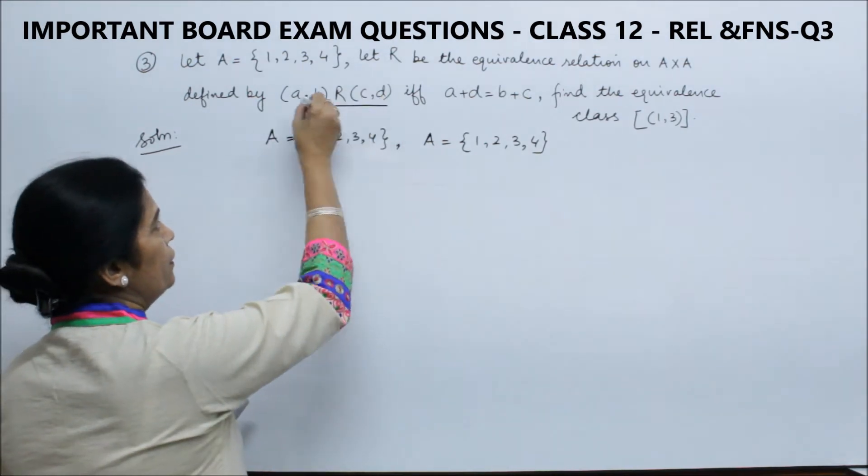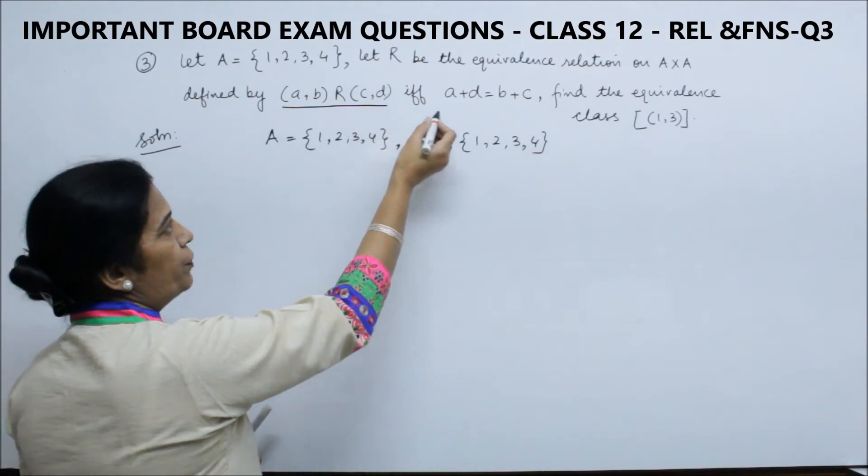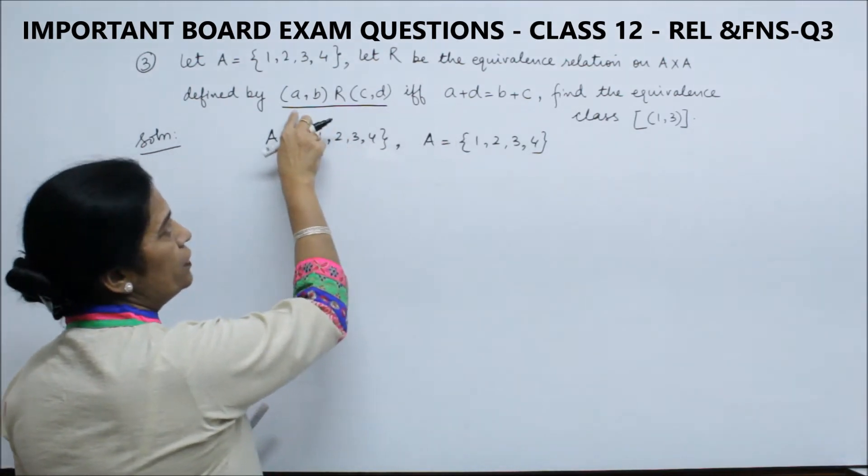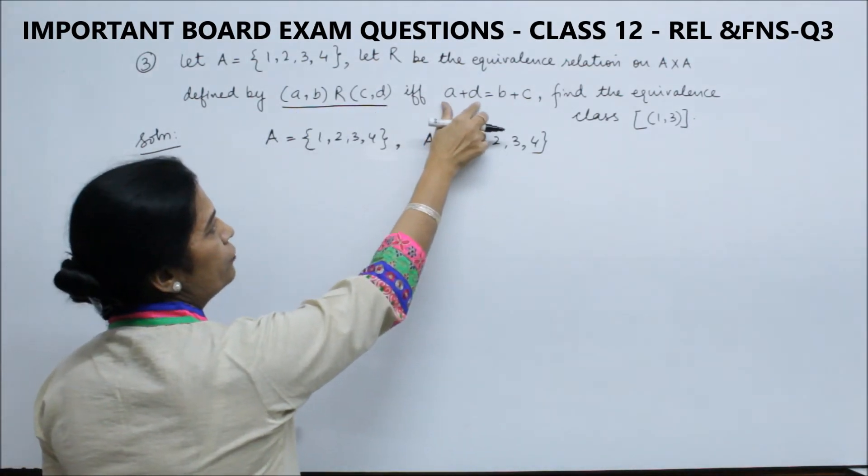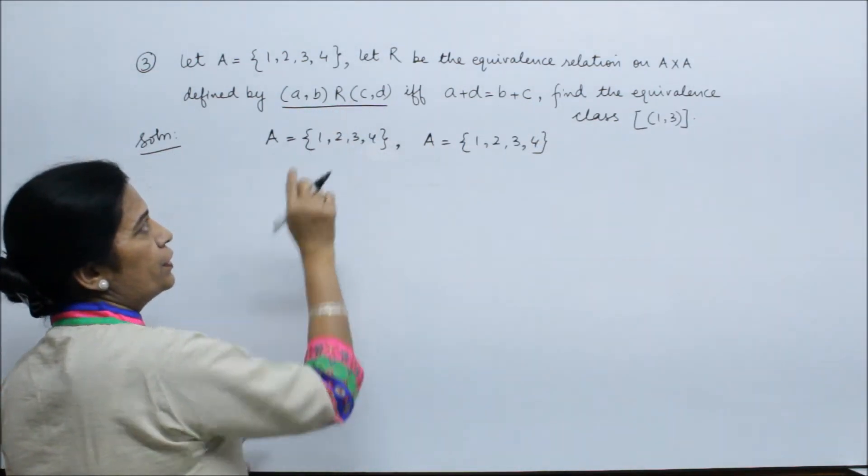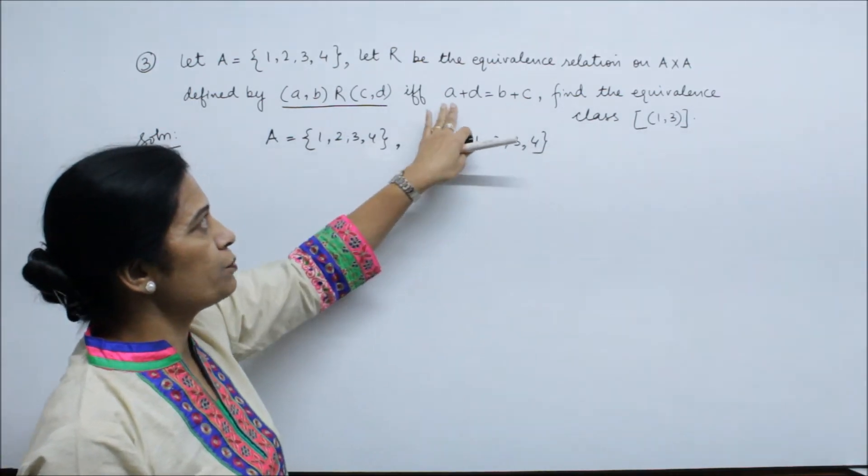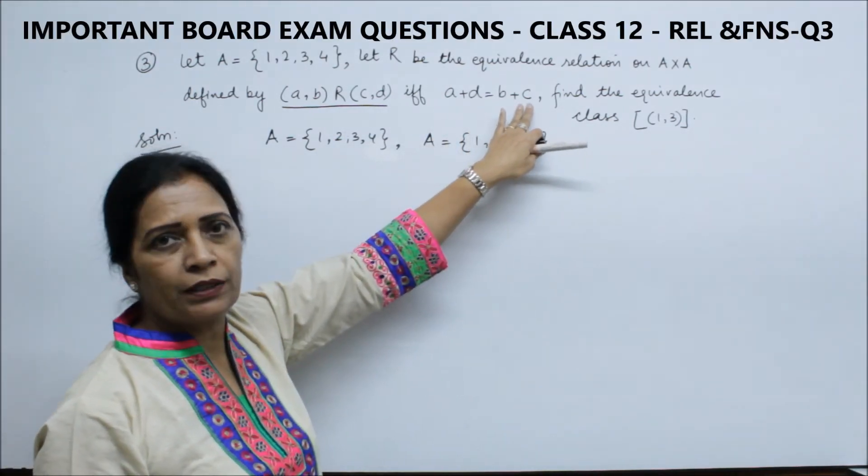This is defined by A and B related to another ordered pair, such that 1st element plus 4th, 1st and 4th add okay. 2nd and 3rd, B and C. 2nd and 3rd are equal to sum of 2nd and 3rd. 1st plus 4th is equal to 2nd plus 3rd.